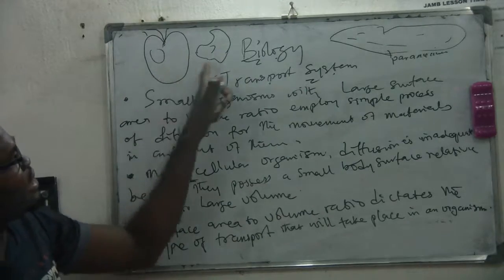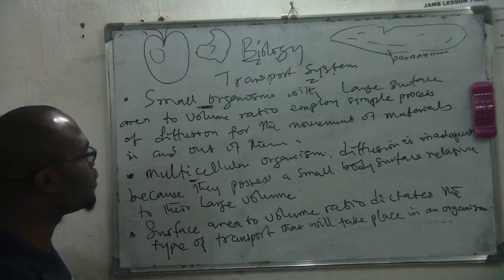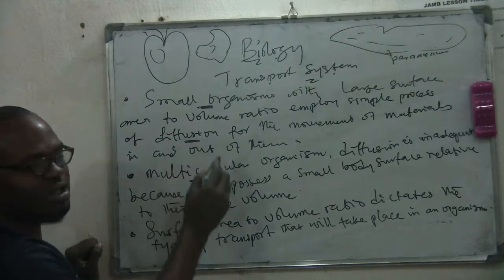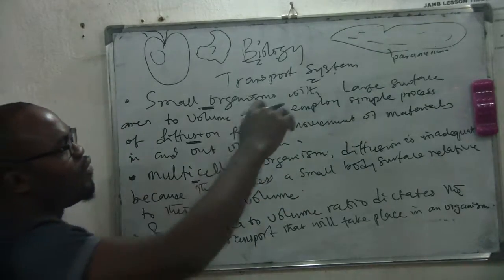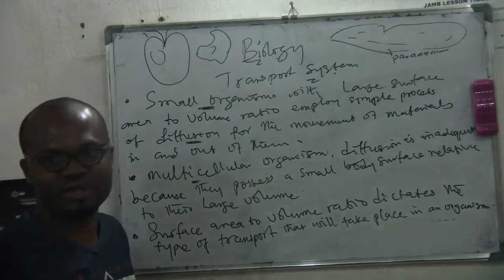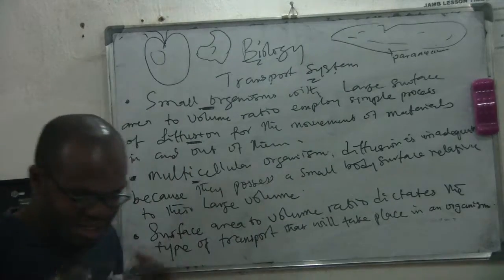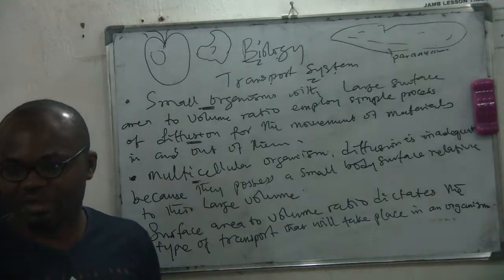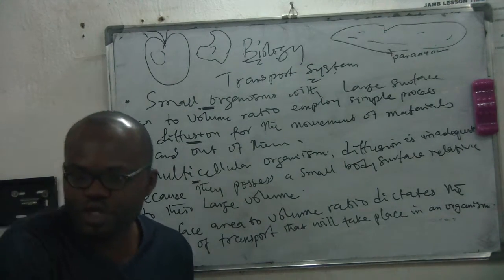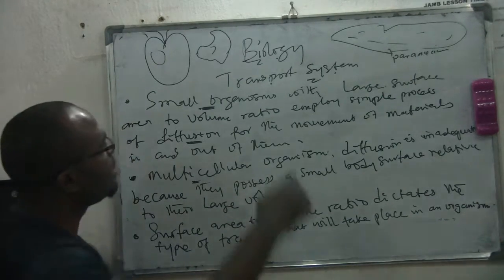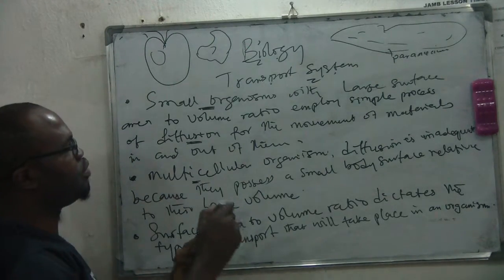In unicellular organisms, there is no need for full-blown transportation. What they use is simple diffusion. Anything they need will just fall on top of their body and they are already using it, because they have a large surface area to volume ratio. Their volume is very small but their surface area is big. They don't need veins and arteries. They use just simple diffusion - if they need oxygen, oxygen from the air will just fall on their bodies.